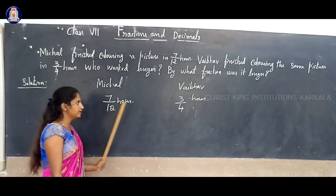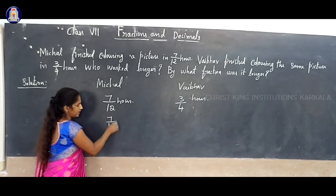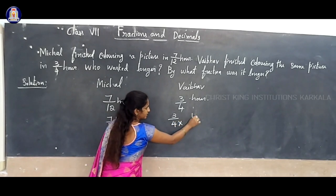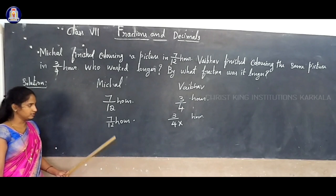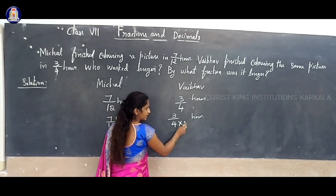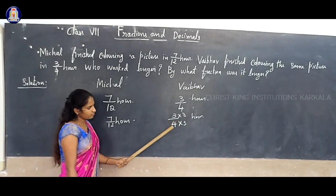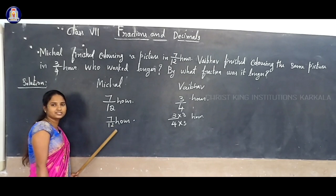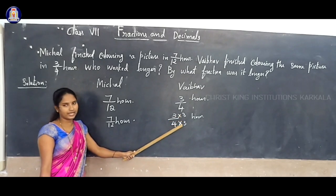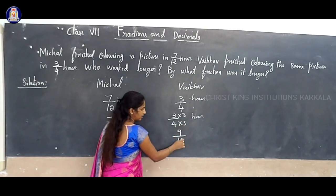So we have 7/12 hour and 3/4 hour. How much do we multiply to get the same denominator? Here it is 12, here it is 4. How much is 4 times to make 12? You must multiply 3 — to both numerator and denominator. If you multiply, 3 threes are 9, and 4 threes are 12.